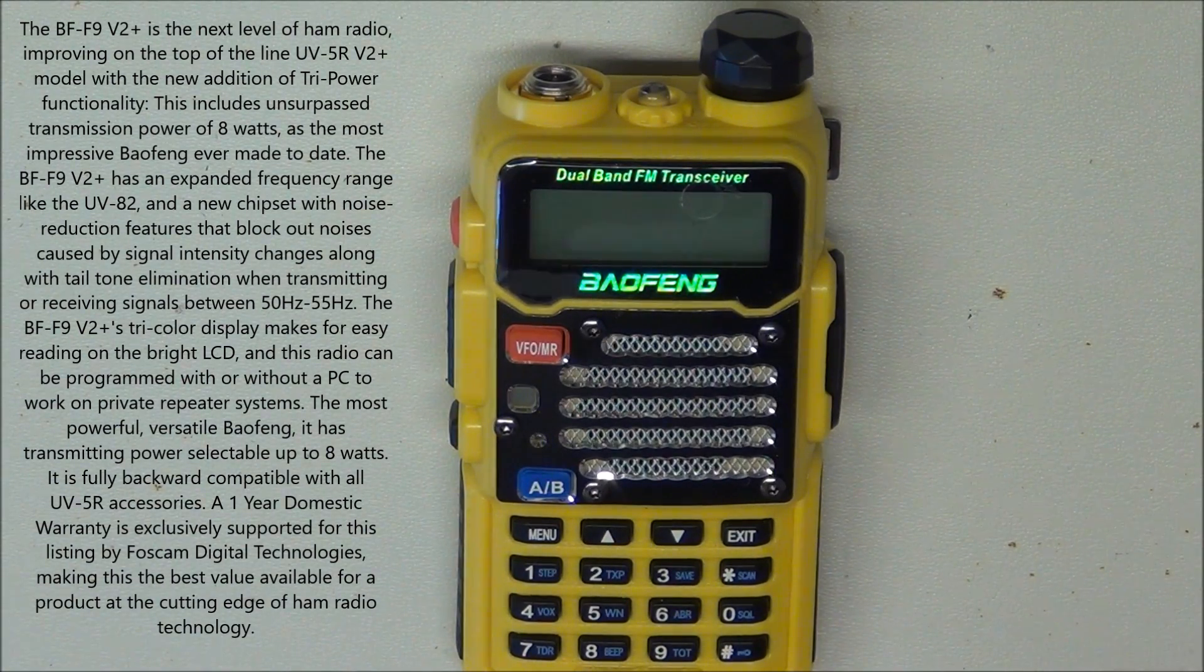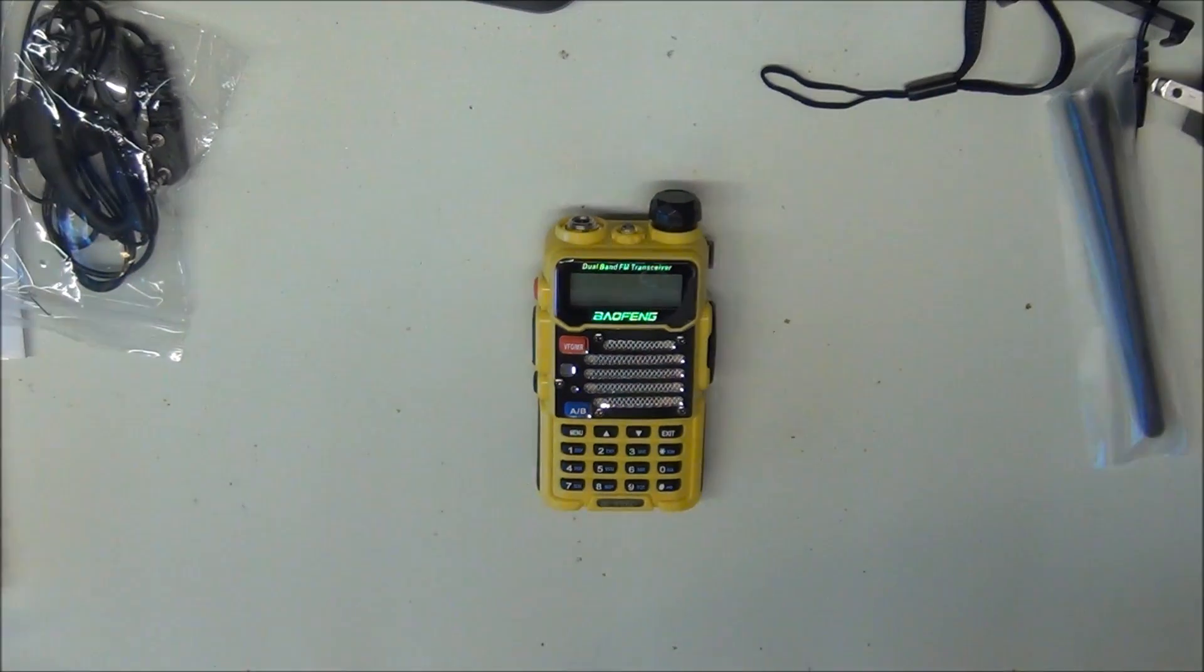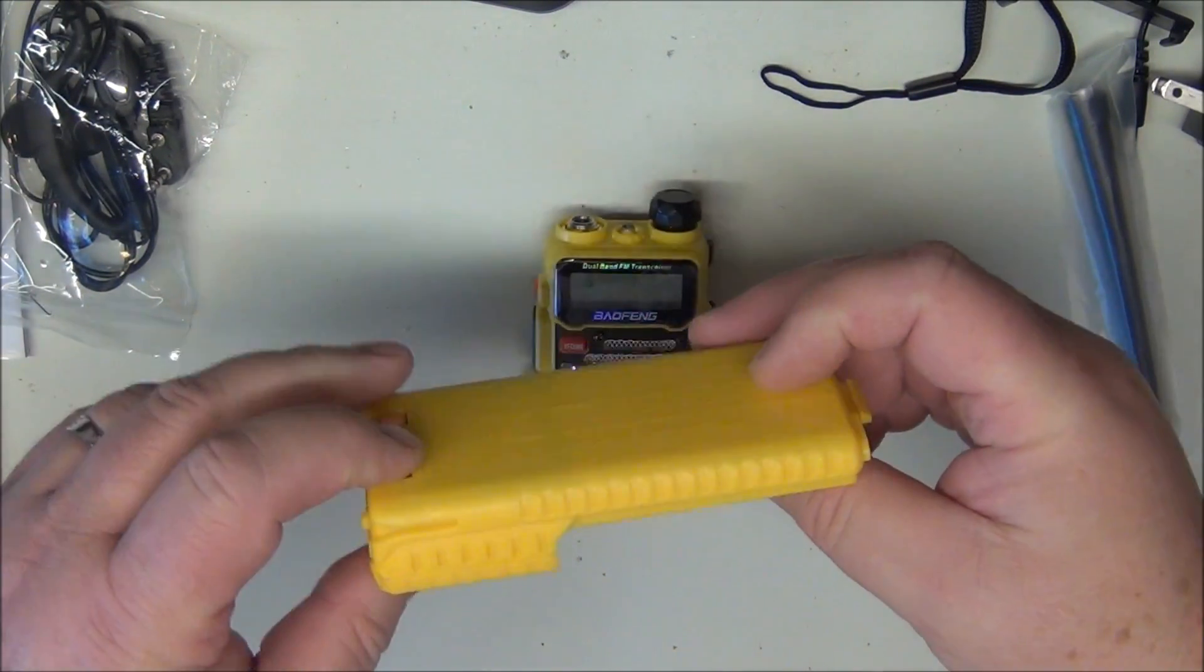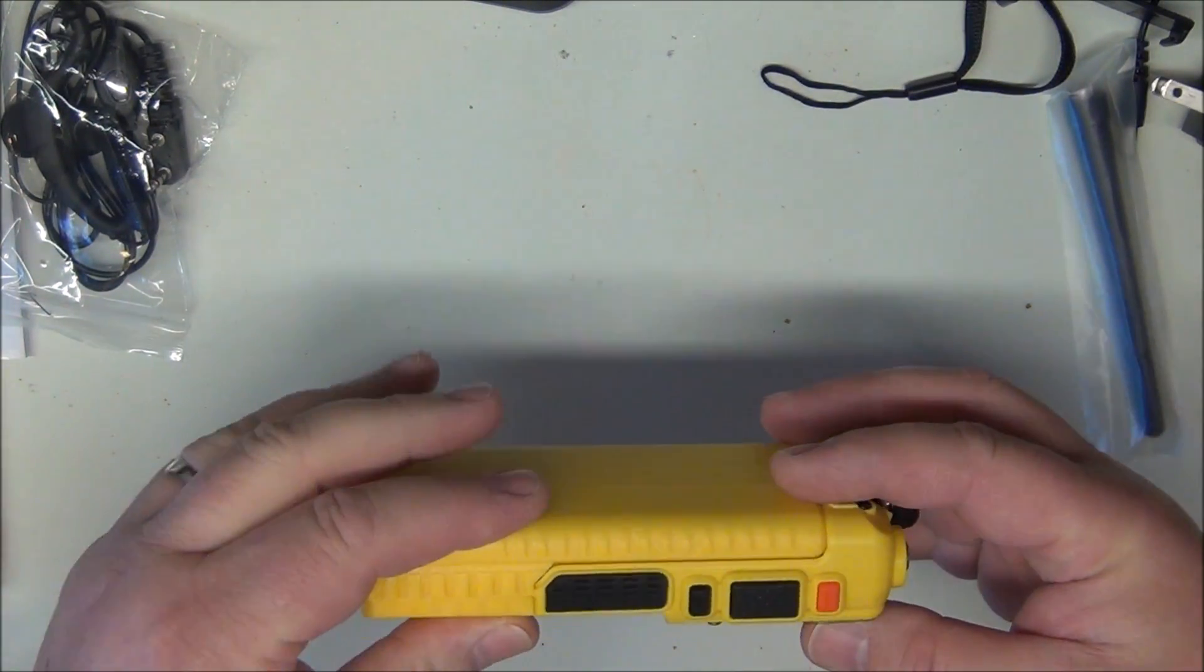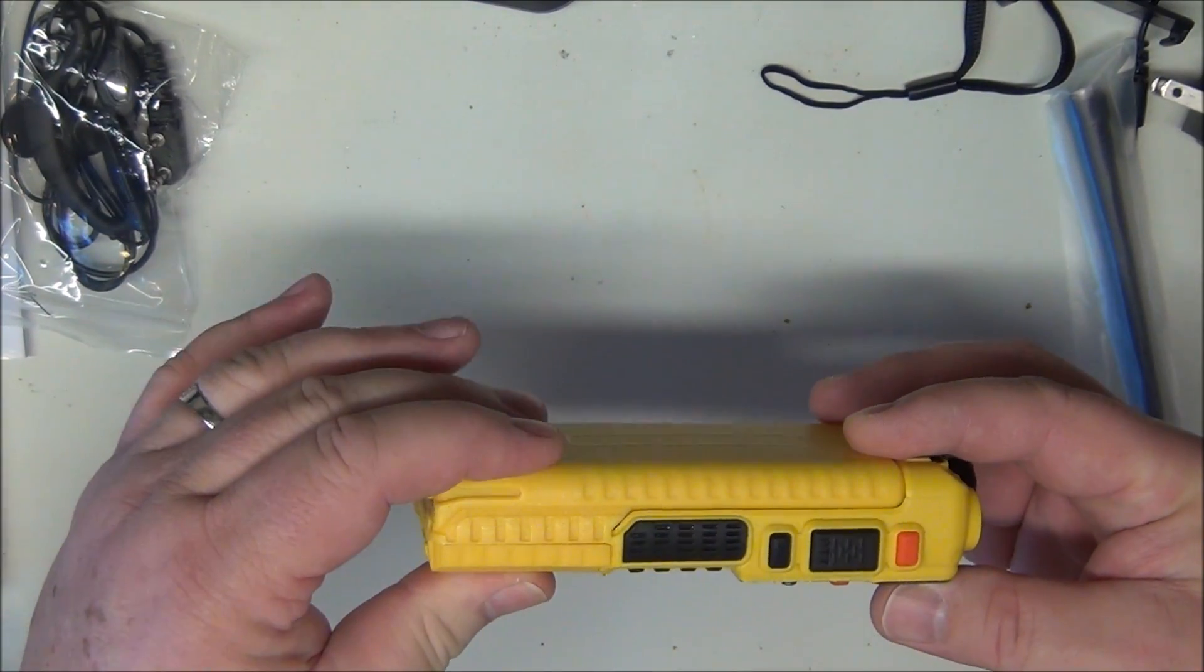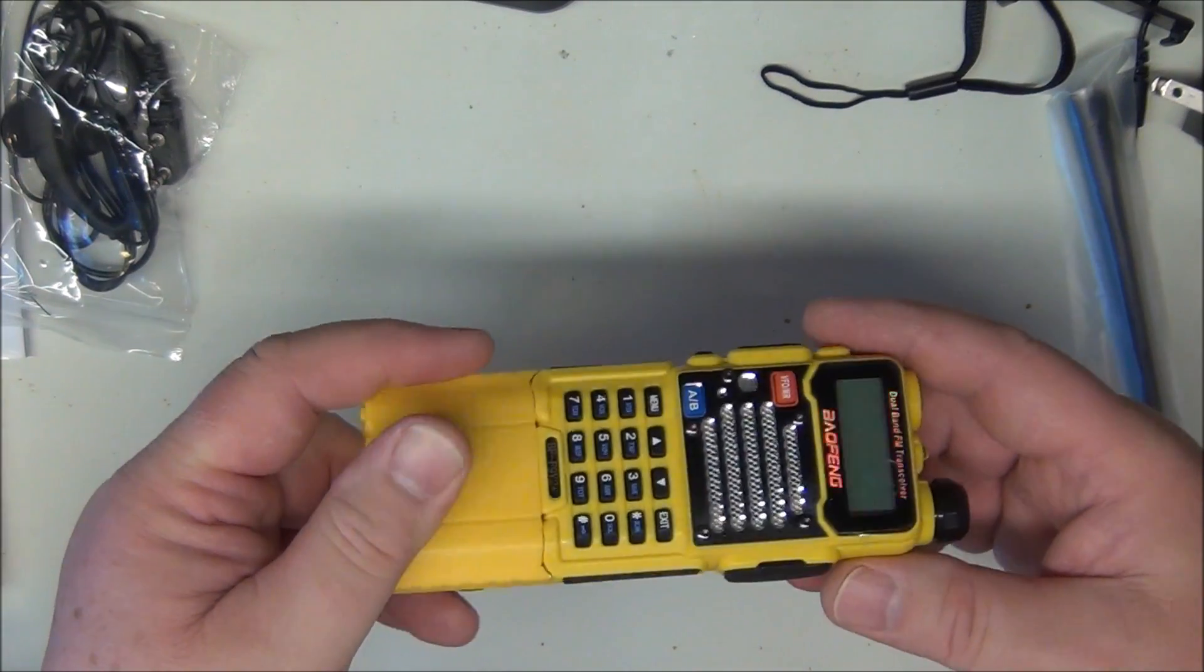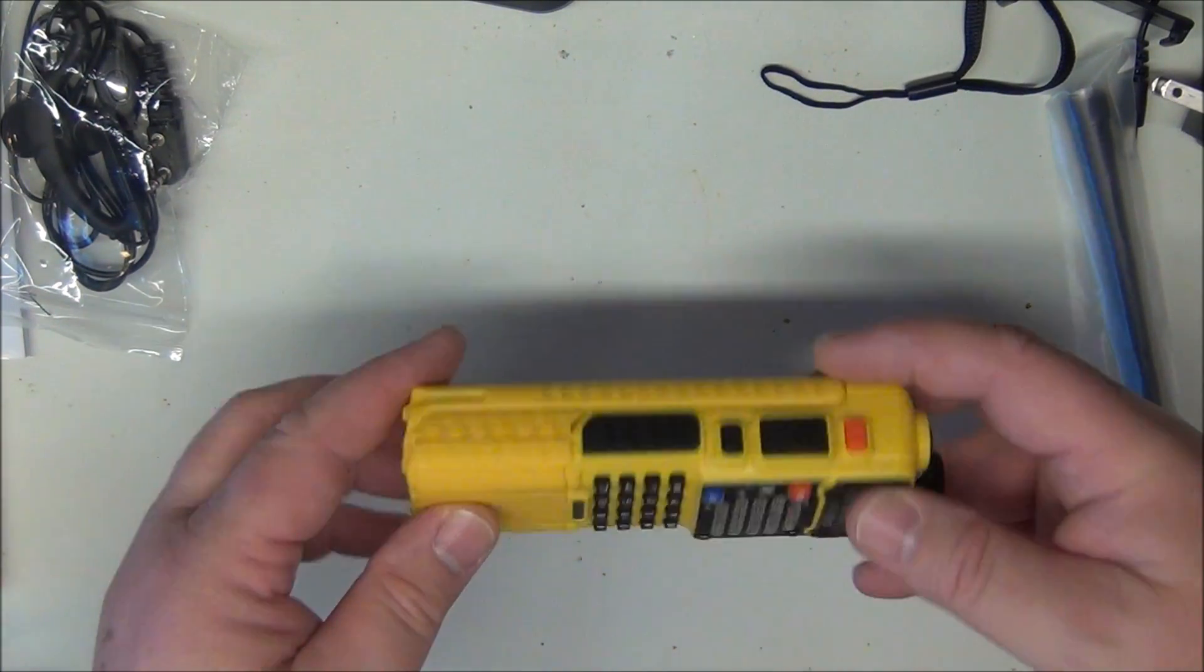So the first thing I'm going to do is just take a look. I'm going to zoom out. Let's see if the UV5R extended battery works. And sure enough, now mine's come apart. I've dropped it a few times. That's not a function of the radio, that's me. So the extended battery seems to work. Color matches fairly well.